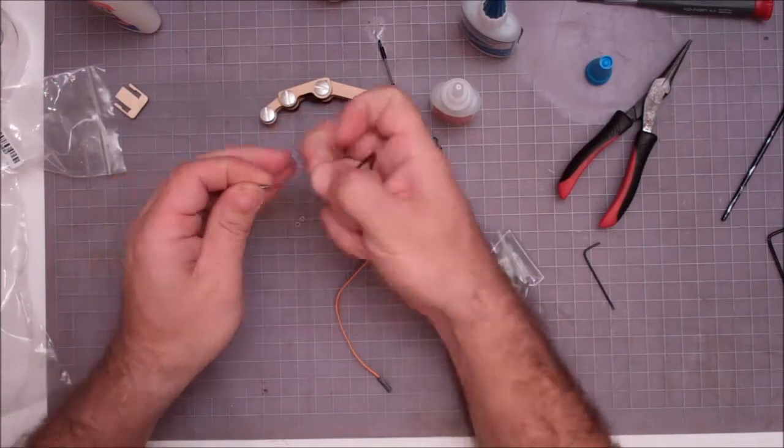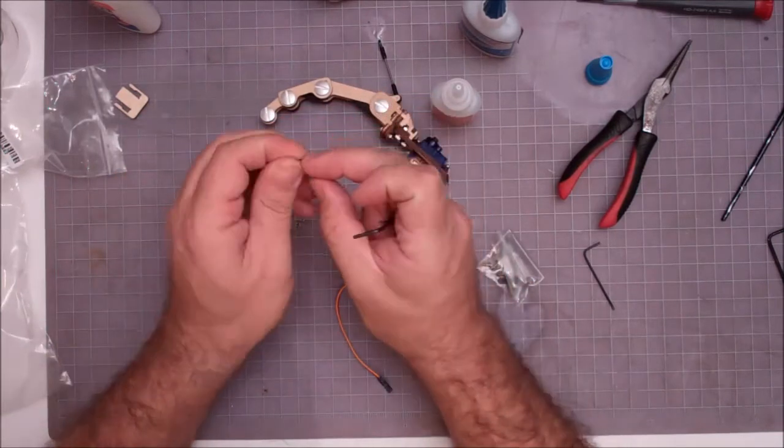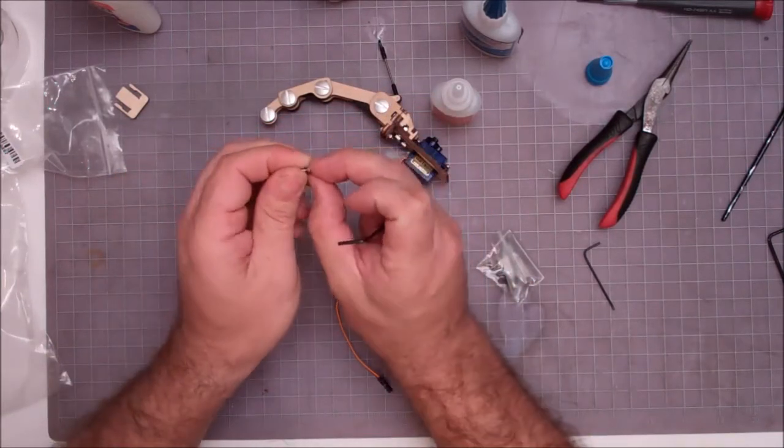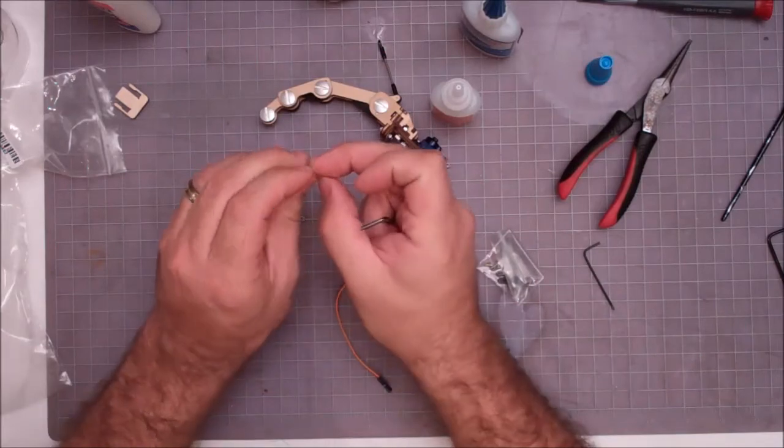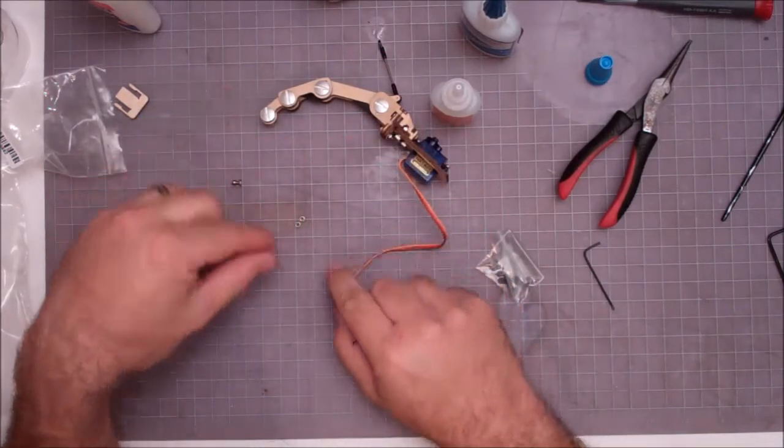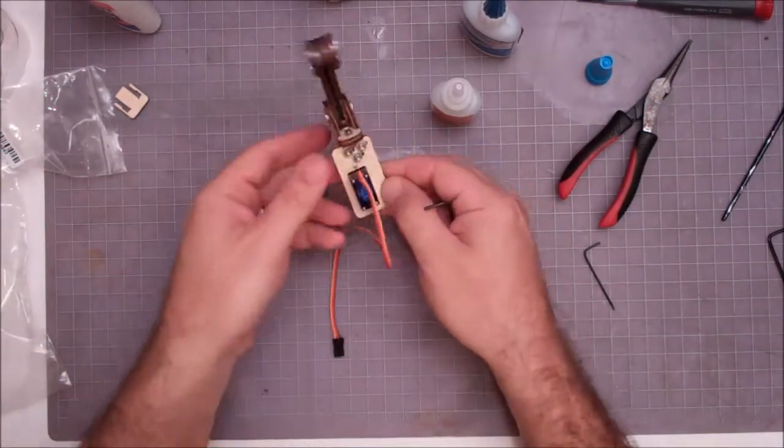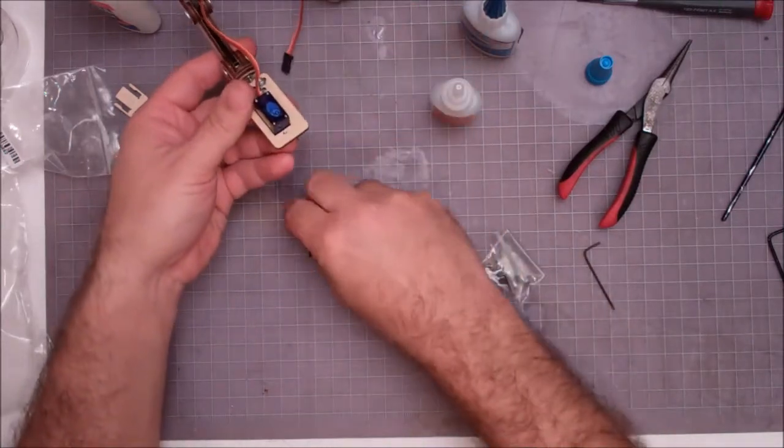That third extra nut is actually a metric two millimeter nut and it fits the ball for putting it on the horn. So that one we're going to set aside and the other two that are left are going to be the 256 nuts that go on the backside of these screws.